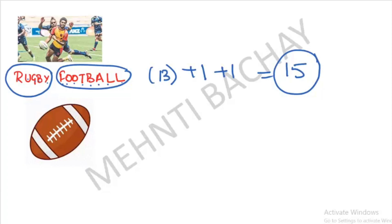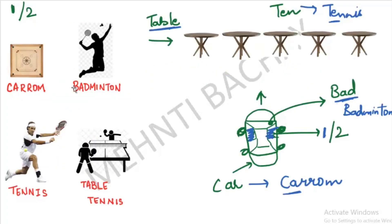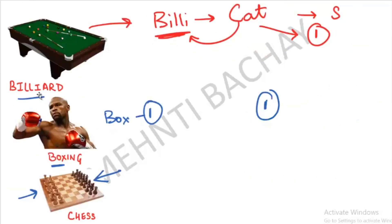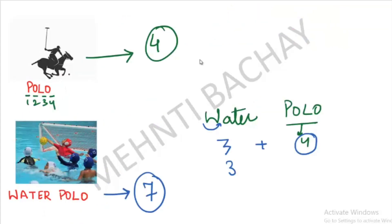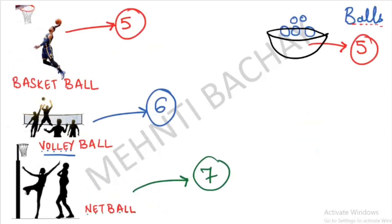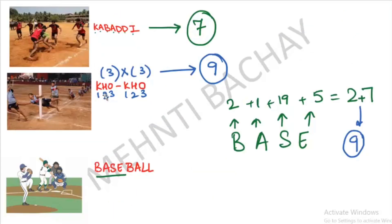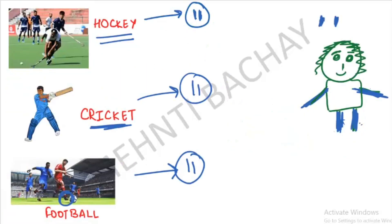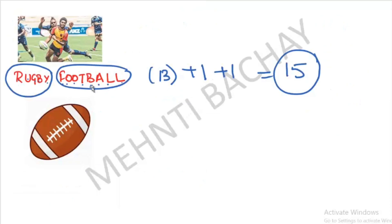Let's recap. Carom, Badminton, Tennis, Table Tennis: 1 or 2 players. Billiard, Boxing, Chess: 1 player. Polo: 4, Water Polo: 7. Basketball: 5, Volleyball: 6, Netball: 7. Kabaddi: 7, Kho Kho: 9, Baseball: 9. Hockey, Cricket, Football: 11. Rugby Football: 15. I hope these tricks are easy and you'll remember them.